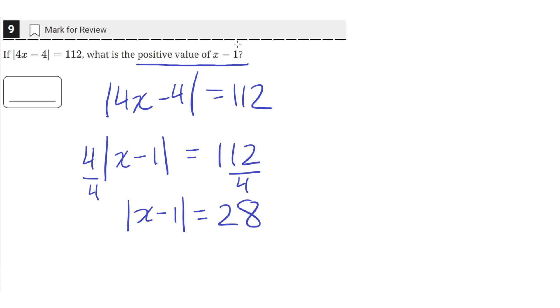So that means the positive value of x minus 1 is equal to 28, because the absolute value gives us two equations.